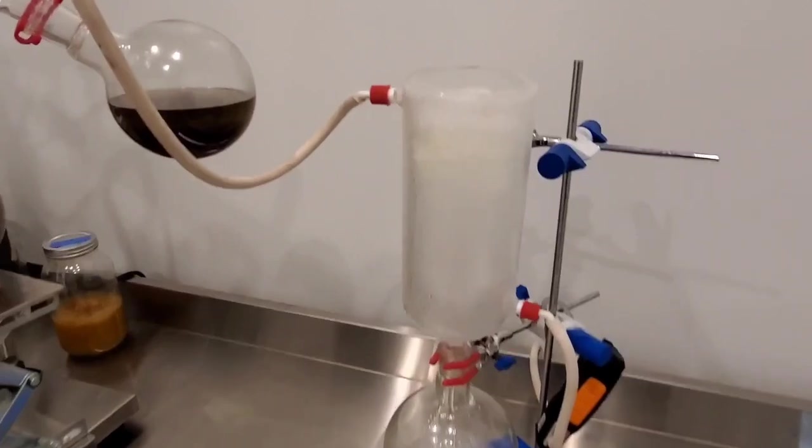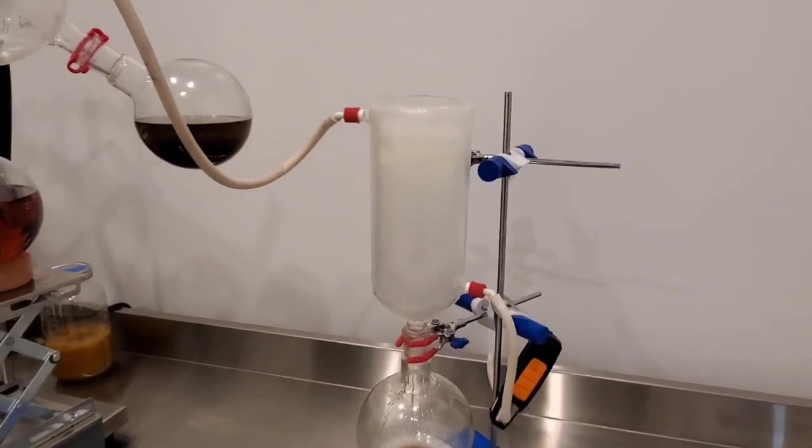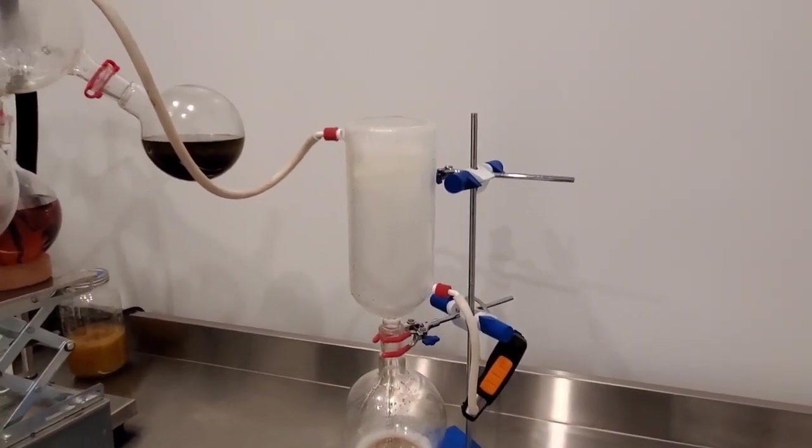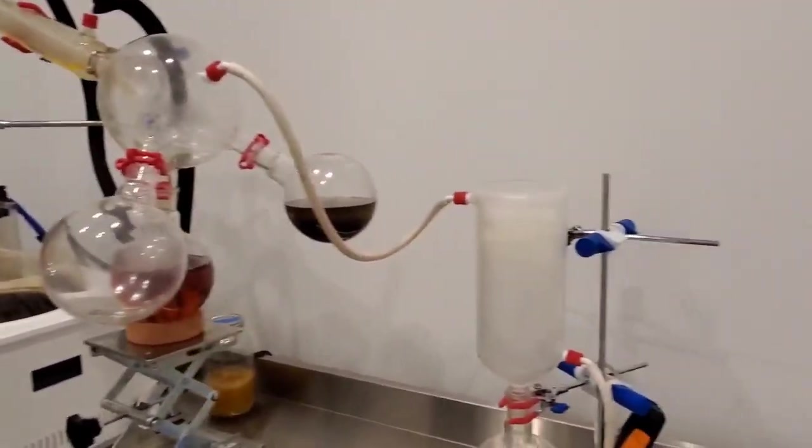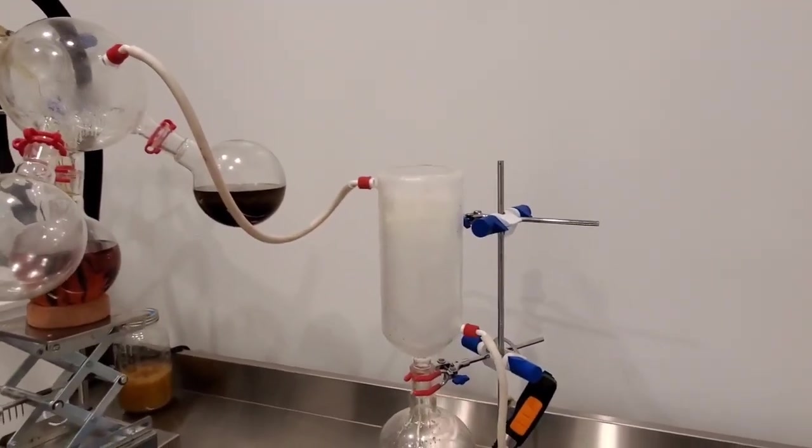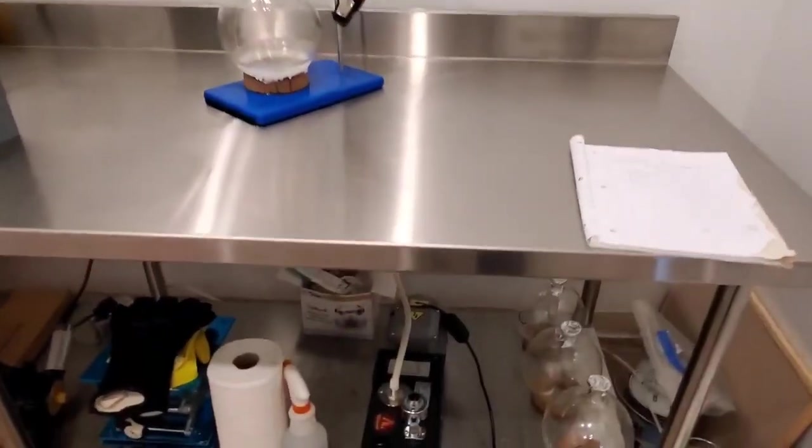And so that cold trap is making sure that any vapors that didn't turn into liquid in the cowbell are turning into vapors before they make it to the rotary vane vacuum pump.